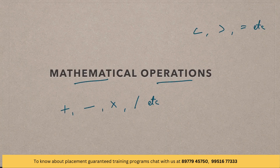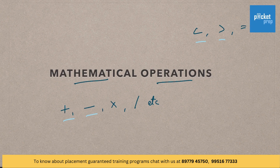Actually, there is a trick in these questions. These signs and symbols are replaced by artificial ones in the question. Based on the given question, you have to substitute them and solve accordingly. You will have a clear idea when we start solving the questions.